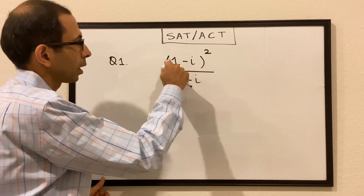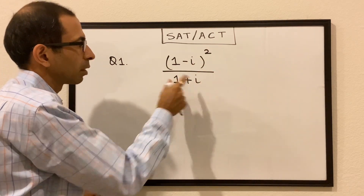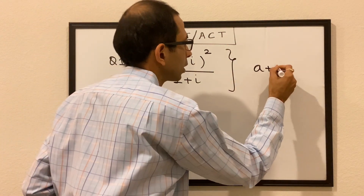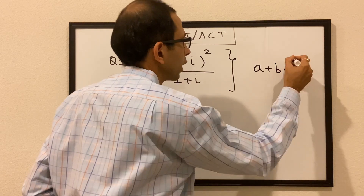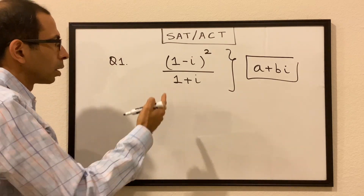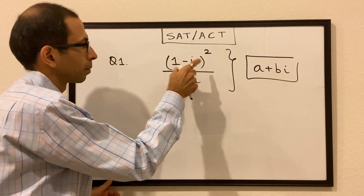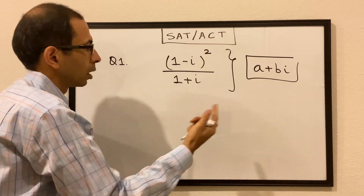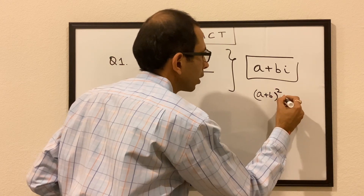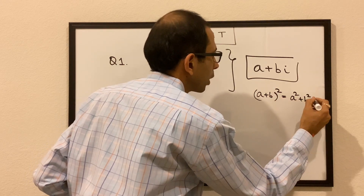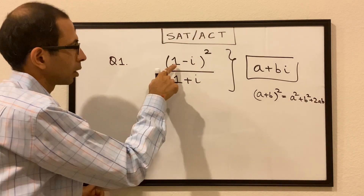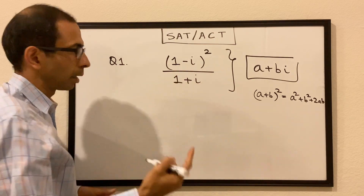We have this fraction (1 - i)² divided by (1 + i) and we have to reduce it to a + bi form. We can expand the numerator using the identity (a + b)² = a² + b² + 2ab, where our a is 1 and our b is -i.